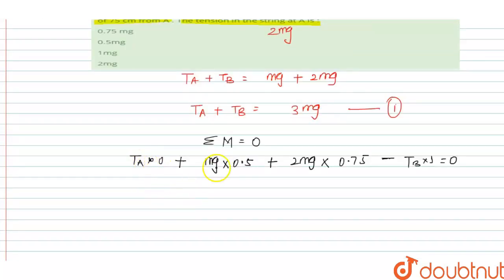Ta times 0 equals 0. This is 0.5Mg plus 3Mg by 2, which equals Tb.